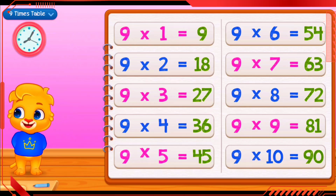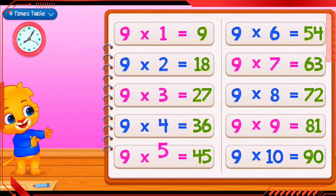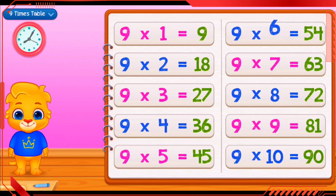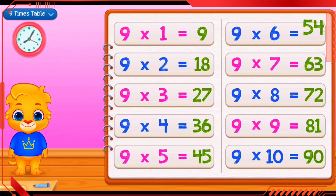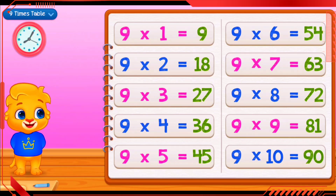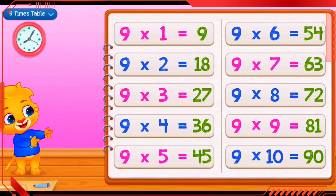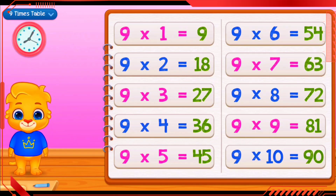9 times 5 equals 45. 9 times 6 equals 54. 9 times 7 equals 63.